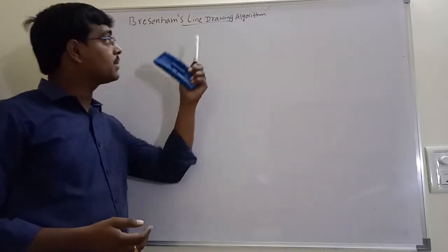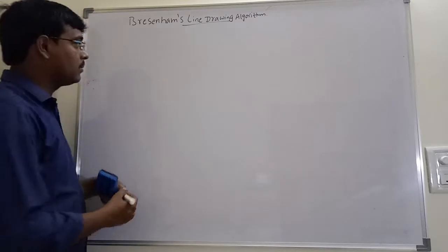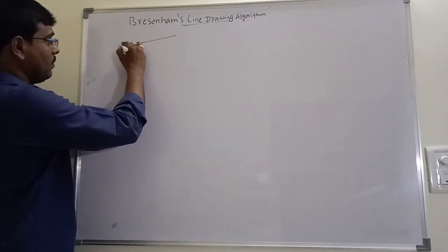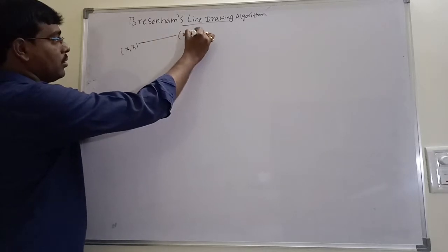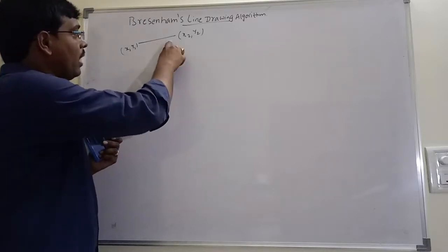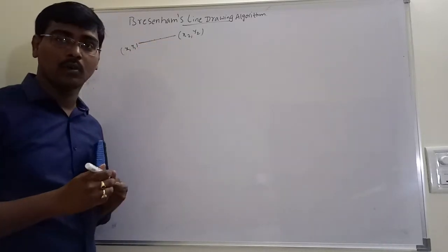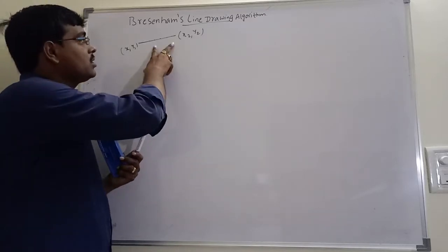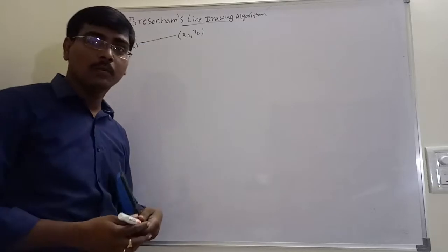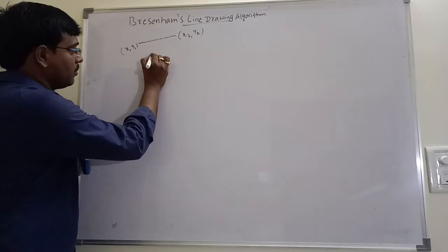Hi friends, today's topic is Bresenham's line drawing algorithm. So what is a line drawing algorithm? Consider two end points of a line, x1, y1 and x2, y2. To draw a line between these two end points, we have to identify the intermediate points among these two end points. Our concept is to identify these intermediate points using Bresenham's line drawing algorithm.